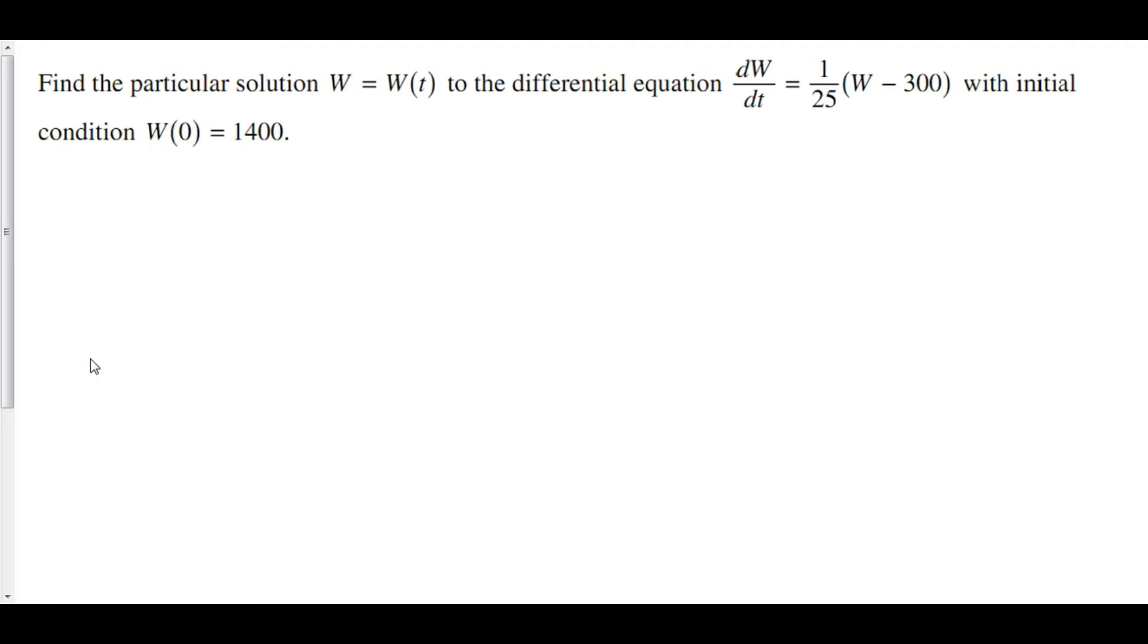Here we have a differential equation, dw/dt equals 1/25(w - 300), and we have initial condition w(0) equals 1400. We are asked to find the particular solution given this initial condition.